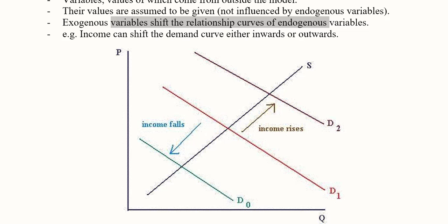For example, the demand function is an endogenous variable, and its curve gets shifted when an exogenous variable — income — changes. If income increases favorably, it shifts demand from D1 to D2. If income changes unfavorably, it shifts demand to a lower level, from D1 to D0. So the exogenous variable income has the ability to affect the graph of endogenous variables.